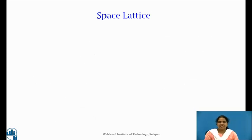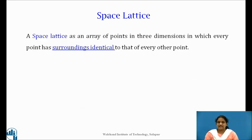We can define space lattice as an array of points in three dimensions in which every point has surroundings identical to that of every other point. A space lattice can be generated by successive translations of an initial point.